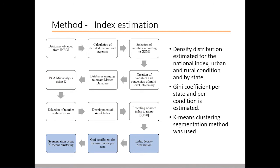Using the index created, the density distribution is estimated for the national index and then disaggregated by urban and rural condition and also by state. Additionally, the Gini coefficient is estimated. And finally, to profile the Mexican households, a K-means clustering segmentation method was used.